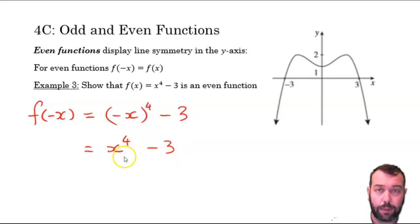And negative x to the power of 4 is the same as x to the power of 4, and negative 3, being independent of x, hasn't changed at all. And we can see here that x to the power of 4 minus 3 is the same as function x. So x to the power of 4 minus 3 is an even function, because when I substituted negative x for x, I arrived at the same function as function x.